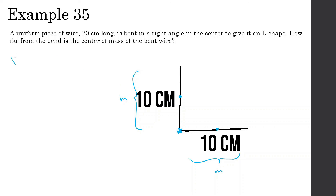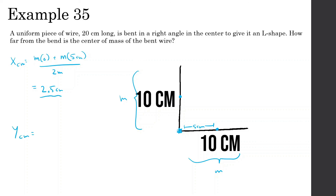For the x-direction: the vertical half has its mass at x = 0, and the horizontal half has its mass at x = 5 centimeters. So x_CM equals (m)(0) plus (m)(5), divided by 2m, giving 2.5 centimeters. For the y-direction: the vertical half's mass is 5 centimeters up, so (m)(5); the horizontal half is at y = 0, so (m)(0). Divided by 2m, giving 2.5 centimeters.